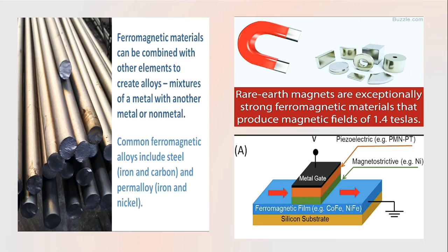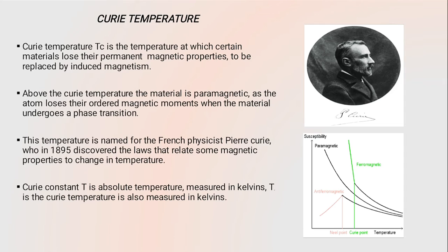This picture shows that rare earth magnets are exceptionally strong ferromagnetic materials that produce a magnetic field of 1.4 tesla. The Curie temperature is named after Pierre Curie, who showed that magnetism was lost at a critical temperature. Above the Curie temperature, the material becomes permanently paramagnetic as the atoms lose the order of their magnetic moments. Higher temperature makes a magnet weaker, as spontaneous magnetism only occurs below the Curie temperature.